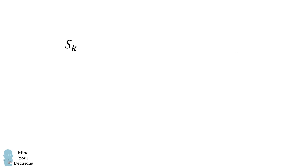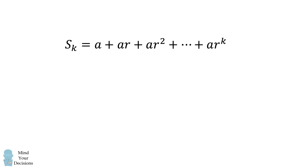Suppose we have a geometric series where the first term is equal to a, and we have a common ratio equal to r. Let's first consider the finite sum where the final term is a multiplied by r to the power of k.